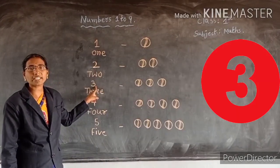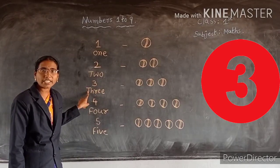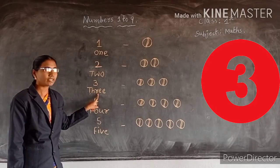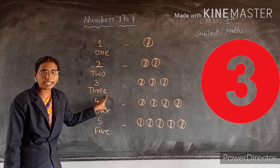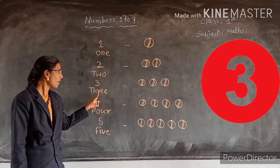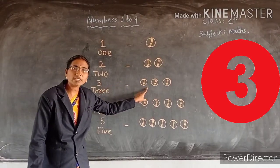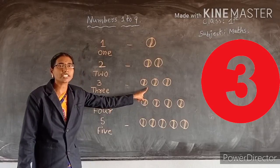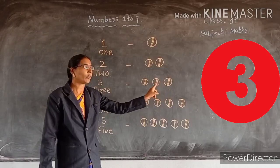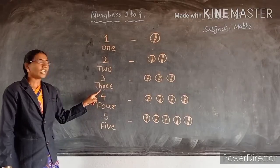What is this number, children? Tell me. 3. What is this spelling? T, H, R, E, E. 3. How many parts are there? Count, children. 1, 2, 3. How many parts are there? 3.